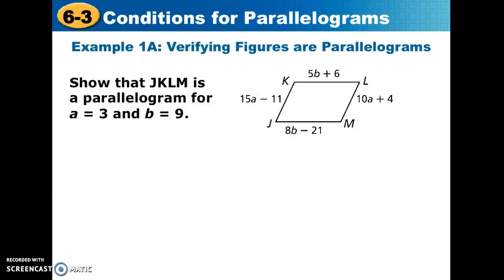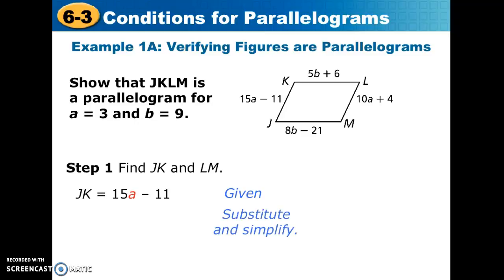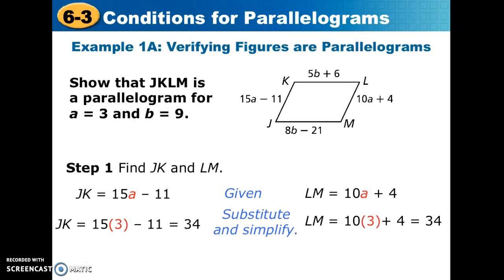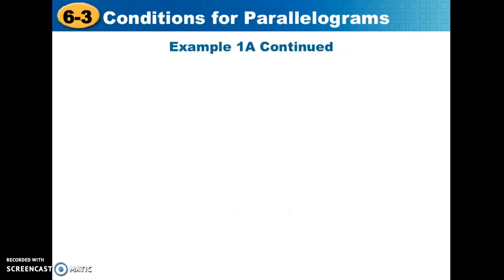For example 1, we have a quadrilateral and we want to prove it's a parallelogram when a equals 3 and b equals 9. We notice that opposite sides have expressions, so we plug in the given values to find the length of segment JK and segment LM. If they turn out to be equal, we know we have one pair of congruent sides — and indeed they are congruent to each other.